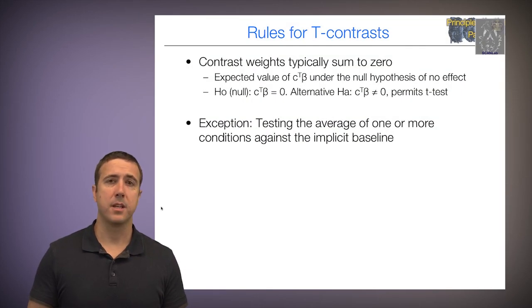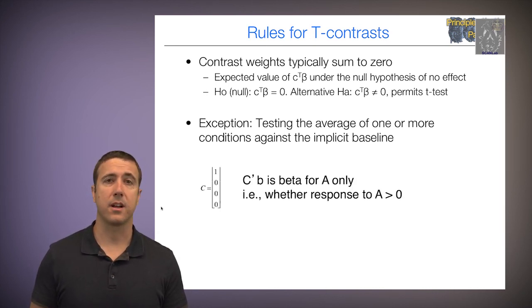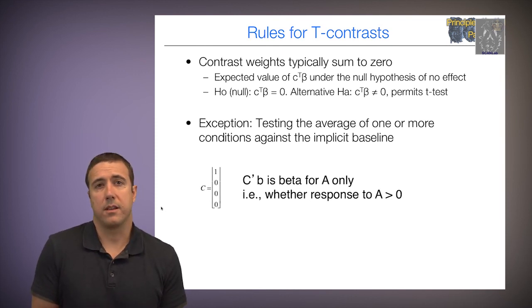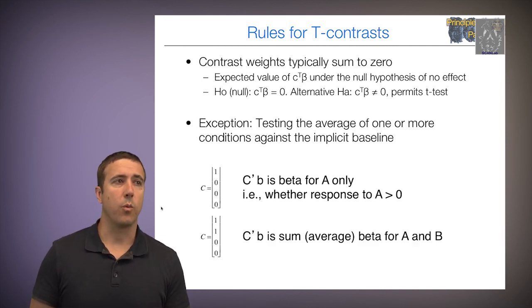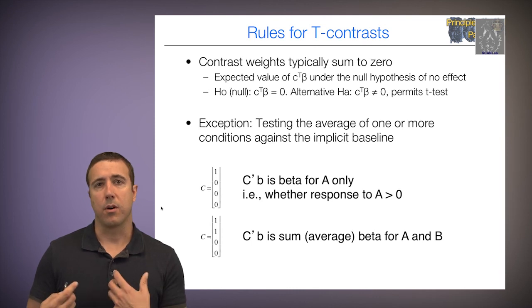There is an exception. So the exception is that I can test the average of one or more conditions against the implicit baseline. So if I test the contrast 1, 0, 0, 0, then that contrast value is testing the significance of the beta value for condition A only. So essentially whether the response to A is different than 0. The contrast 1, 1, 0, 0 tests the sum or the average beta for A and B. In our example, this would be for all the visually presented events, for example.